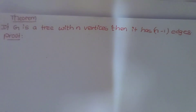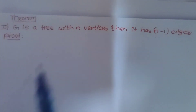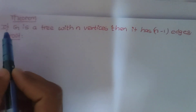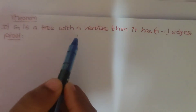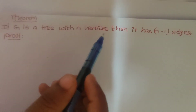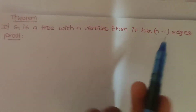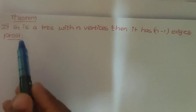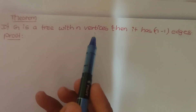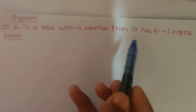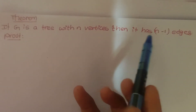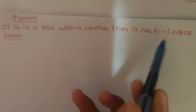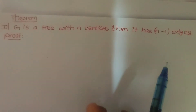Hello everyone. In graph theory we have a new theorem of trees: if G is a tree with n vertices, then it has n-1 edges.